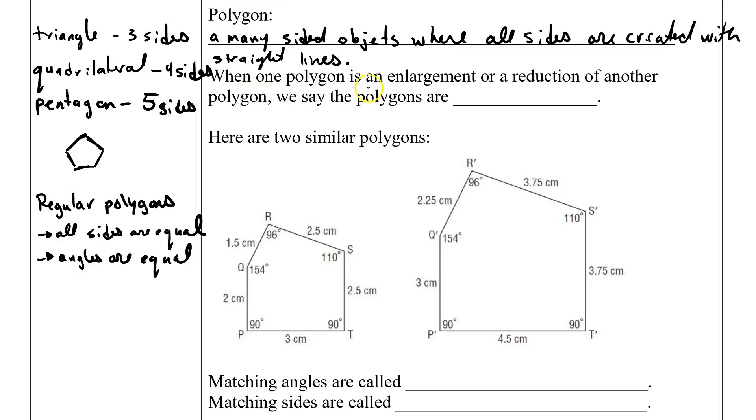So when one polygon is an enlargement or reduction of another polygon, we say that polygons are similar. And in the next lesson, we're actually going to get even more specific. We're not going to talk about similar polygons, but we're going to be talking about specifically similar triangles.